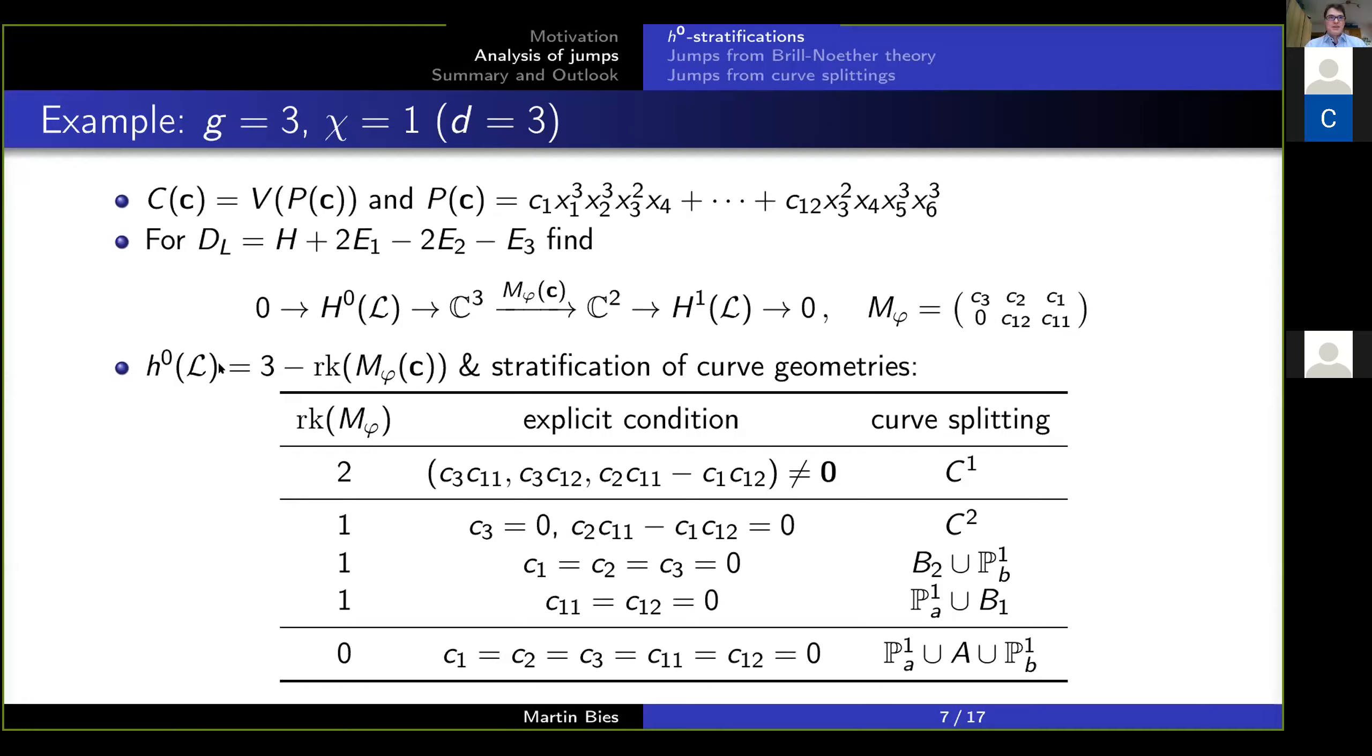Now that you have this matrix, the task is, okay, H^0 is 3 minus the rank of this matrix. So, find me please the rank of this matrix as a function of the parameter c_i in the matrix. The magic word is minors.